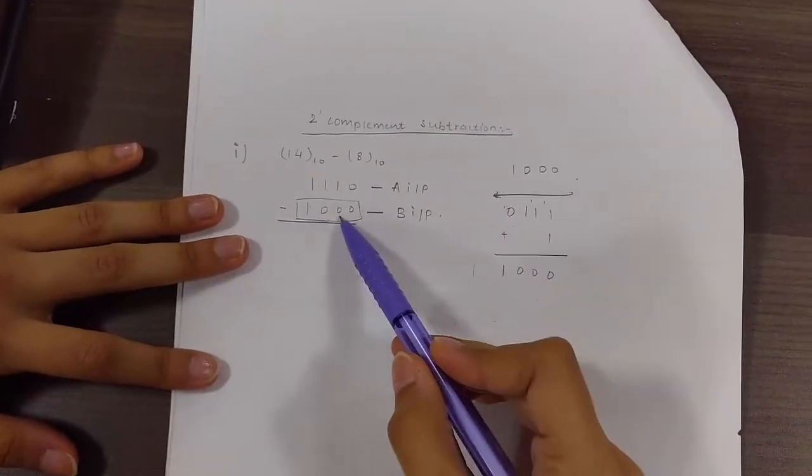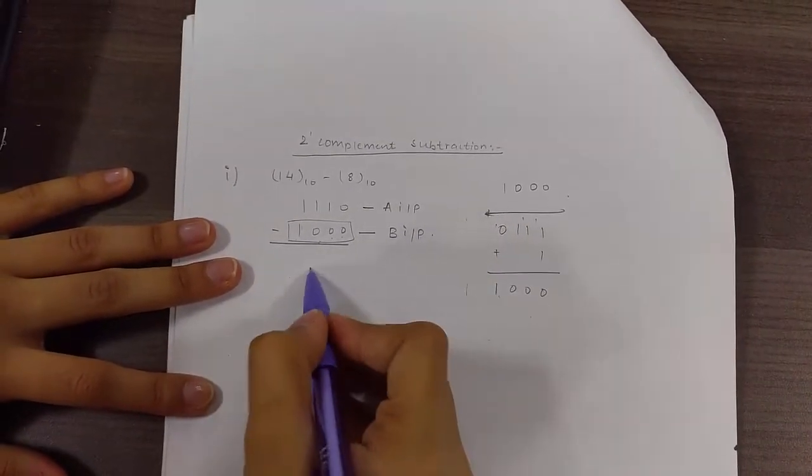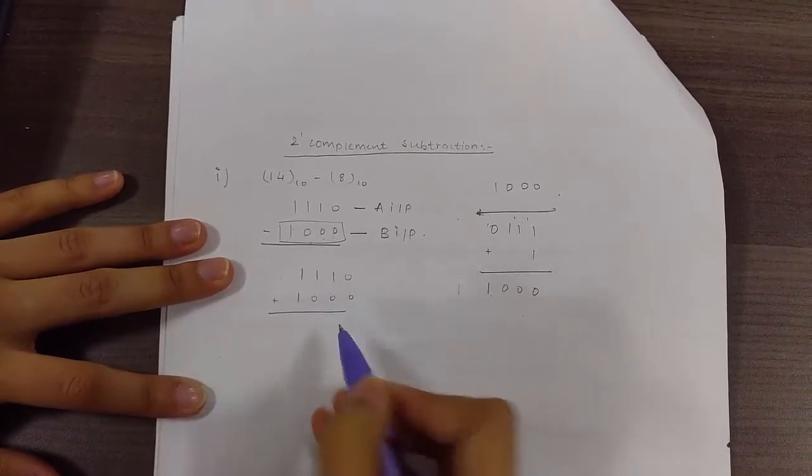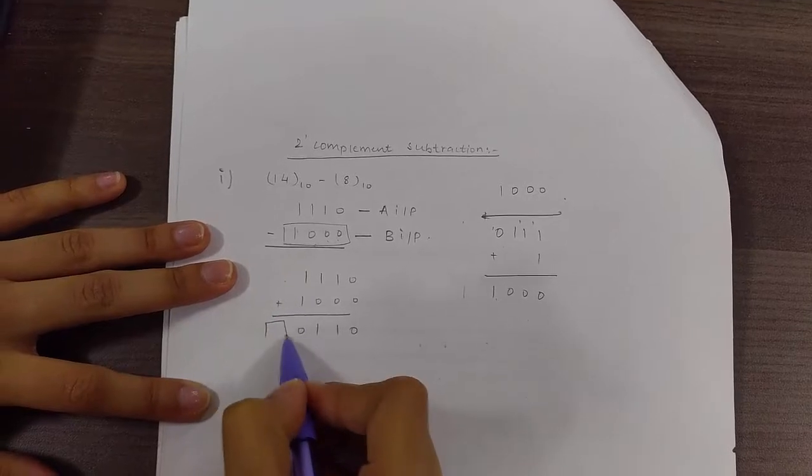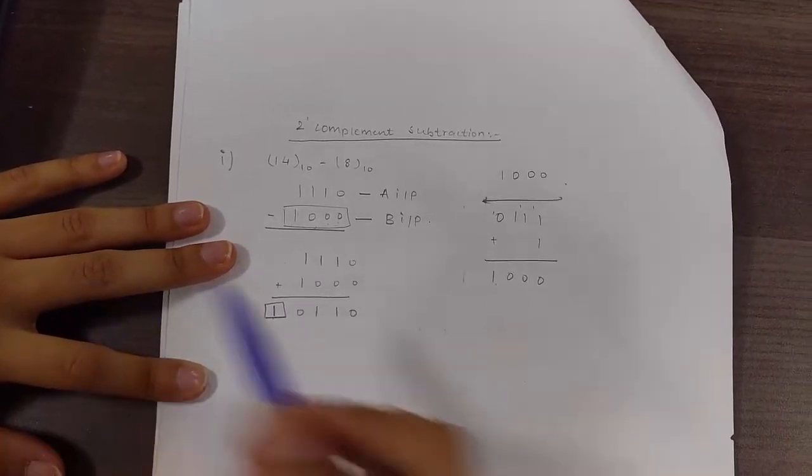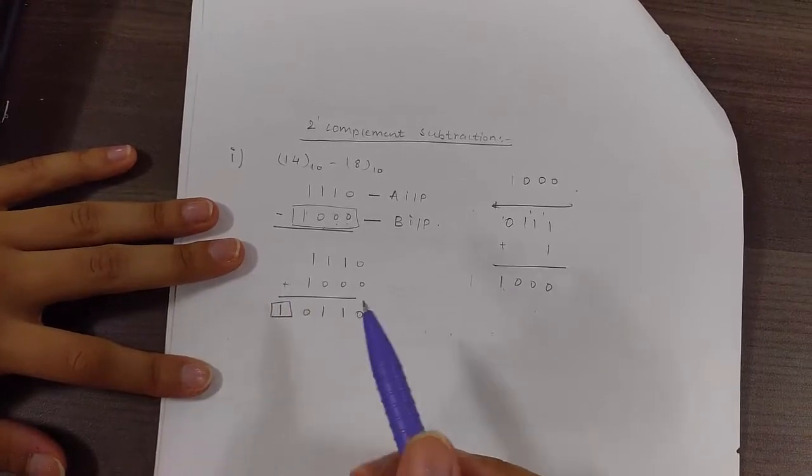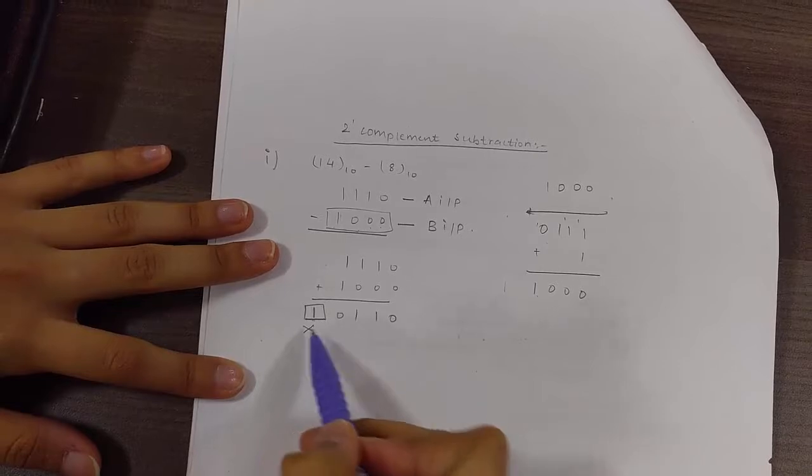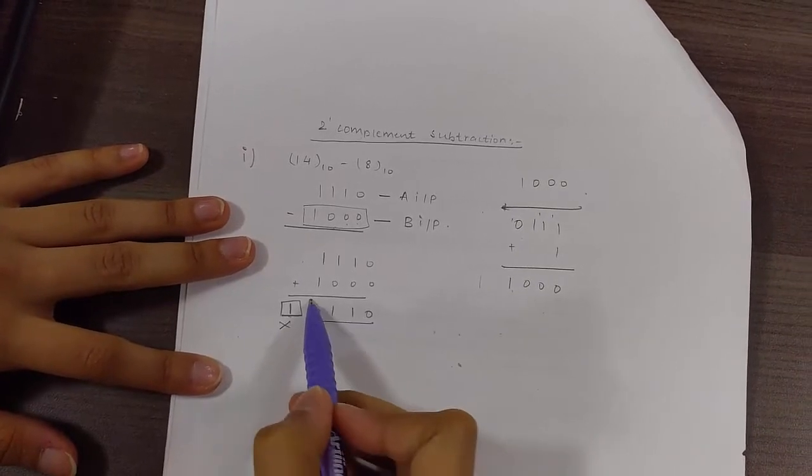2's complement of 1000 is 1000 itself, therefore now we add these 2 numbers. The carry obtained over here is 1. If 1 is the carry obtained then the 14th pin of that adder, that is COUT indicator, will glow. That means we need to discard this output and the output we obtain is this only.